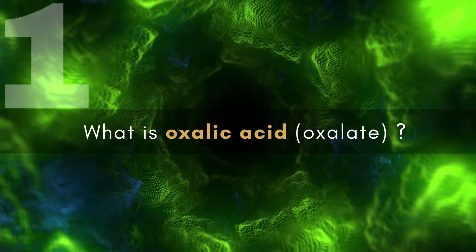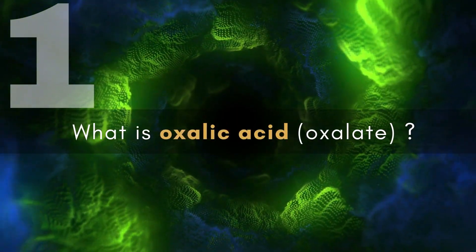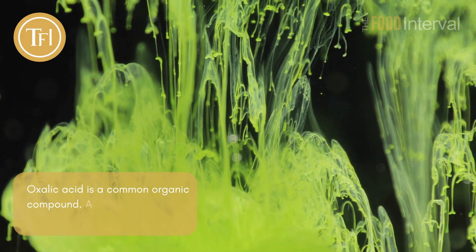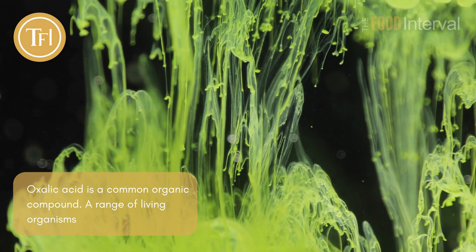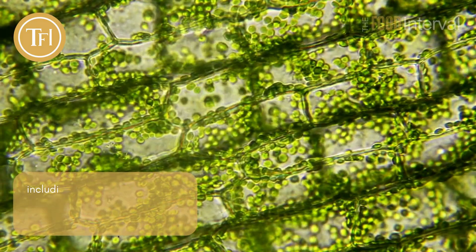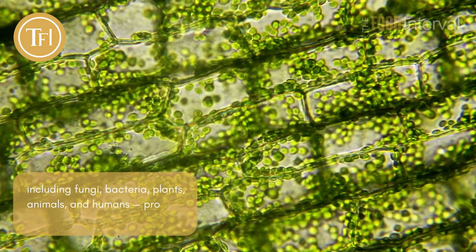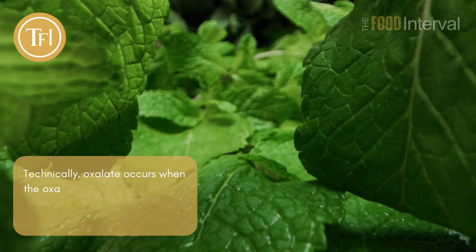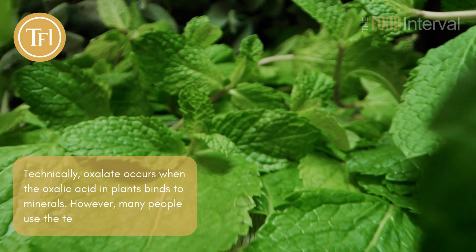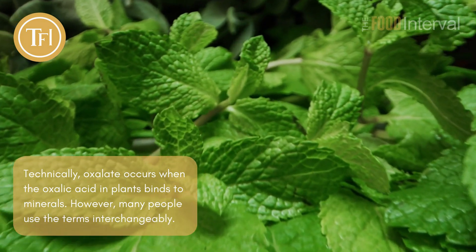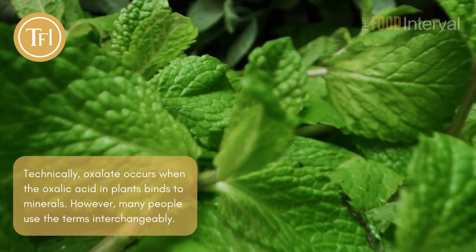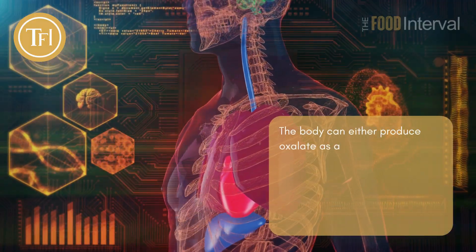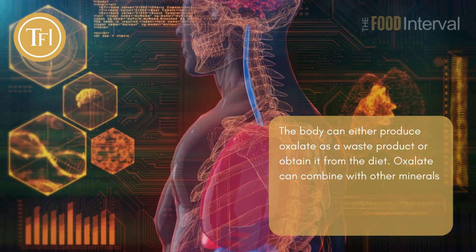Chapter 1: What is oxalic acid or oxalate? Oxalic acid is a common organic compound. A range of living organisms including fungi, bacteria, plants, animals, and humans produce it. Technically, oxalate occurs when the oxalic acid in plants binds to minerals. However, many people use the terms interchangeably.